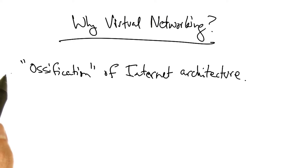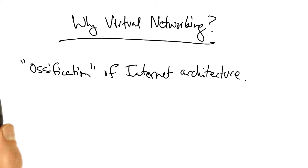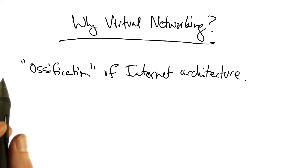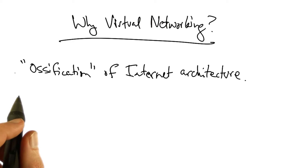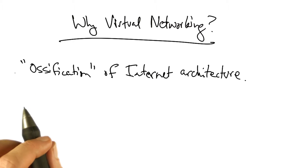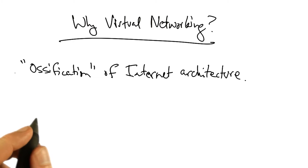One of the main motivations for the rise of virtual networking was the ossification of the internet architecture. In particular, because the internet protocol was so pervasive, it made it very difficult to make fundamental changes to the way the underlying internet architecture operated. There was a lot of work on overlay networks in the 2000s, but one-size-fits-all network architectures were very difficult to deploy. So rather than trying to replace existing network architectures, network virtualization was intended to allow for easier evolution.